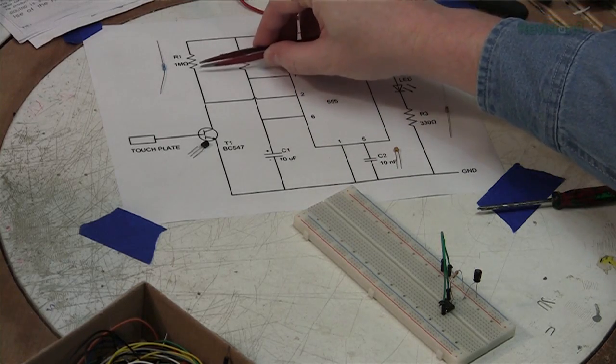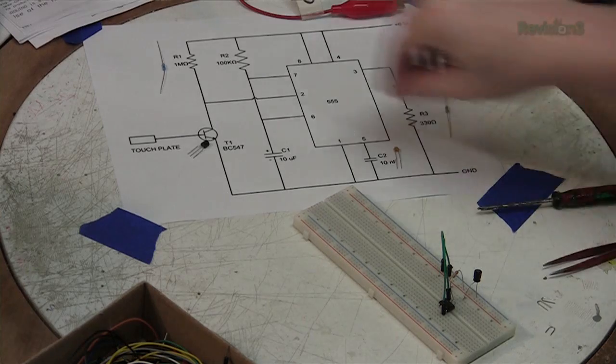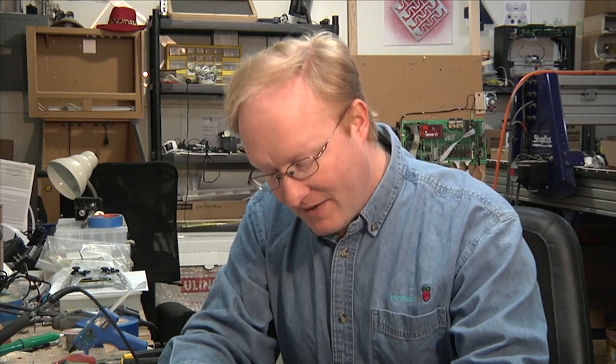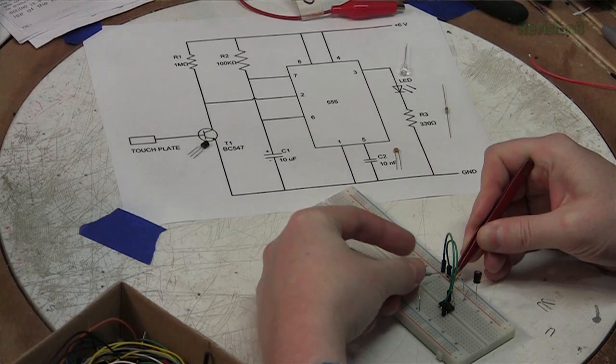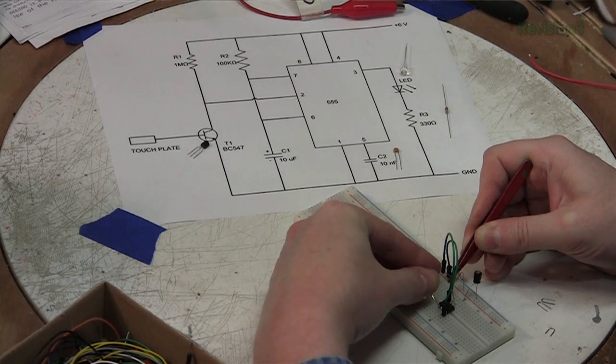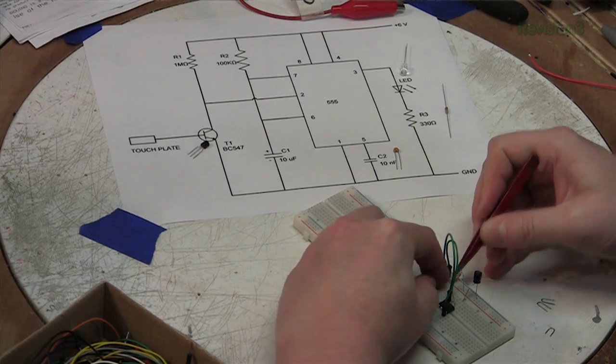Let's go up here. One mega ohm resistor goes from positive 5 volts to pin 2, so we'll do that first. Alright, so we're going to hook up the one mega ohm resistor from positive 5 volts, sneak it over here to pin 2. There we go.